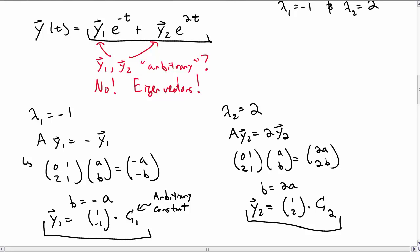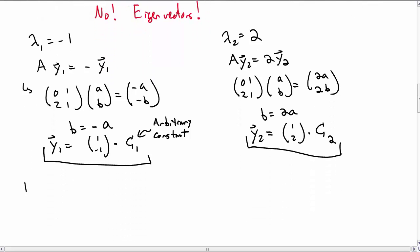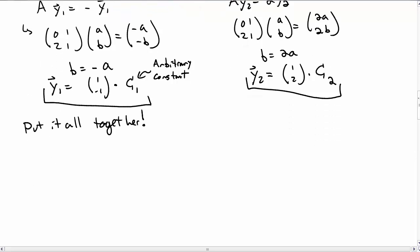So now we have our solution. We can write it in terms of eigenvalues and eigenvectors. So let's put it all together. We had our differential equation, which was y1 dot equals y2, y2 dot is 2y1 plus y2.